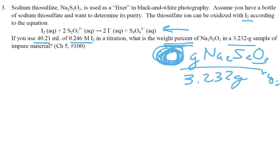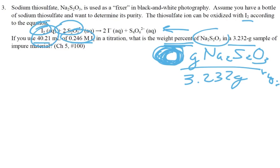So we need to find grams of thiosulfate. Start with milliliters, go milliliters to liters, use the molarity as a conversion factor to get moles of iodine. If I know moles of iodine, I can get moles of thiosulfate using the 1-to-2 ratio from the balanced equation. Then convert to grams of Na₂S₂O₃ using molar mass. Divide by the sample mass to get the weight percent.